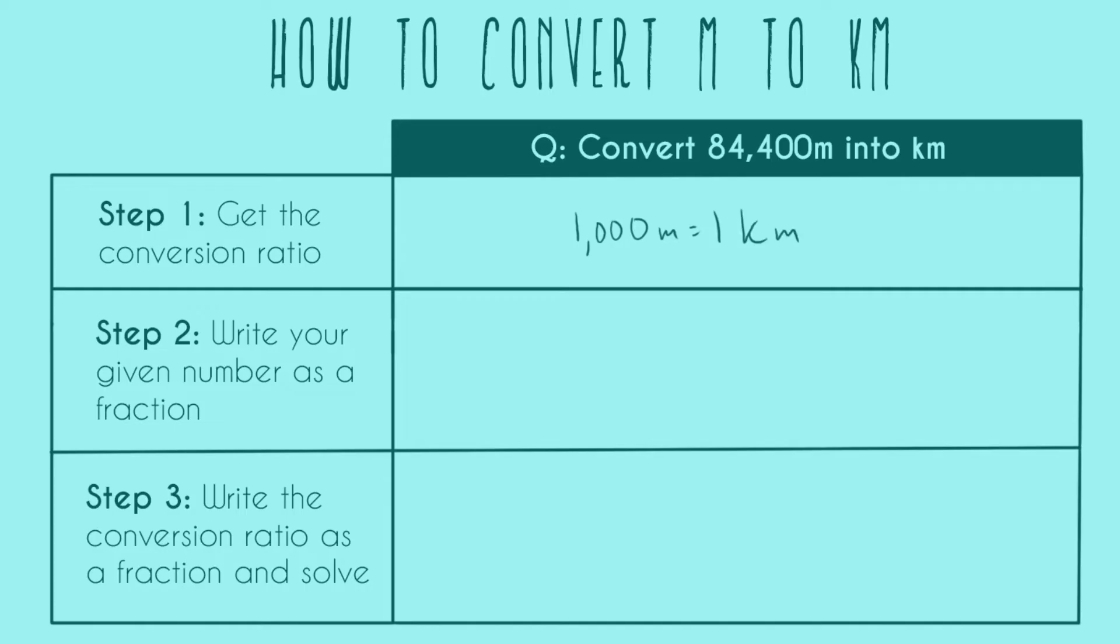Step two is to write your given number as a fraction. So the given number is just the number that we were given in the problem. So for this, it's 84,400 meters. Remember that we can write any number as a fraction with a denominator of one, and also that we have to include units. Unless it's explicitly written as a denominator, the unit is going to go in the numerator just along with the number.